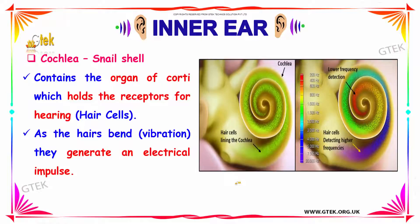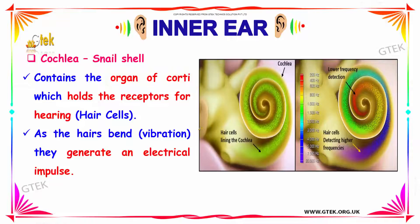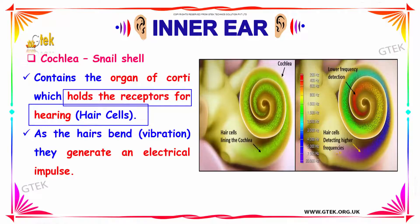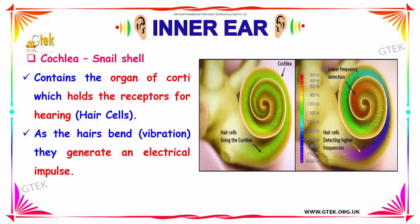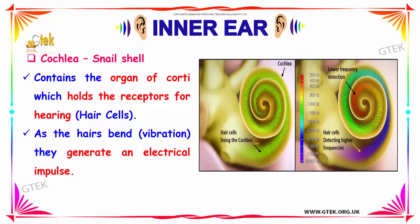The cochlea in your inner ear is also commonly known as the snail shell. You can clearly see that your cochlea has the shape of a snail shell. It contains the organ of Corti, which holds the receptors for hearing — the hair cells. Higher frequencies are detected in one region and lower frequencies are detected by the hairs inside another region. As the hair bends inside your cochlea, it generates an electrical impulse which helps in hearing.